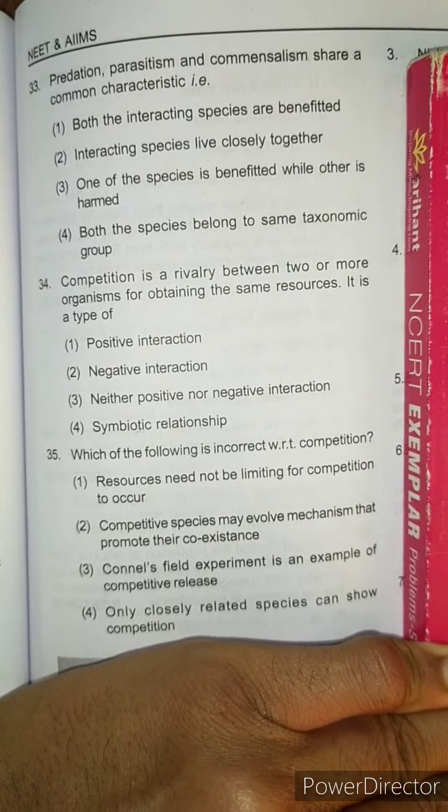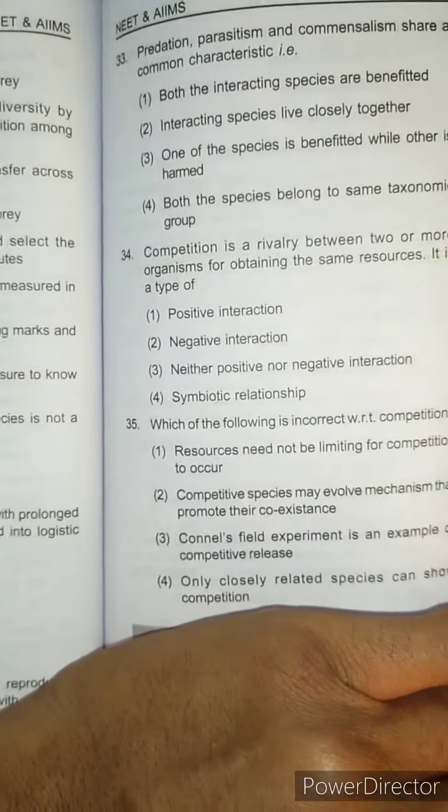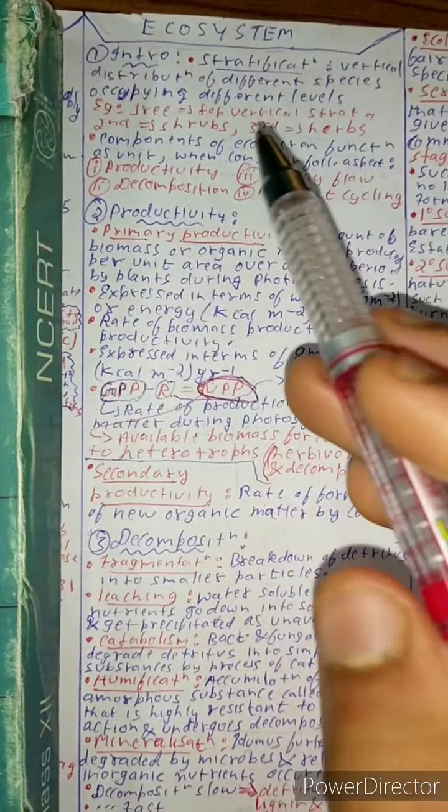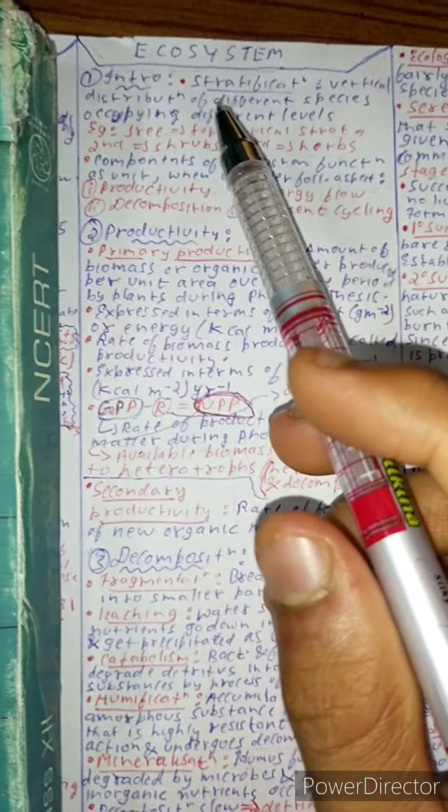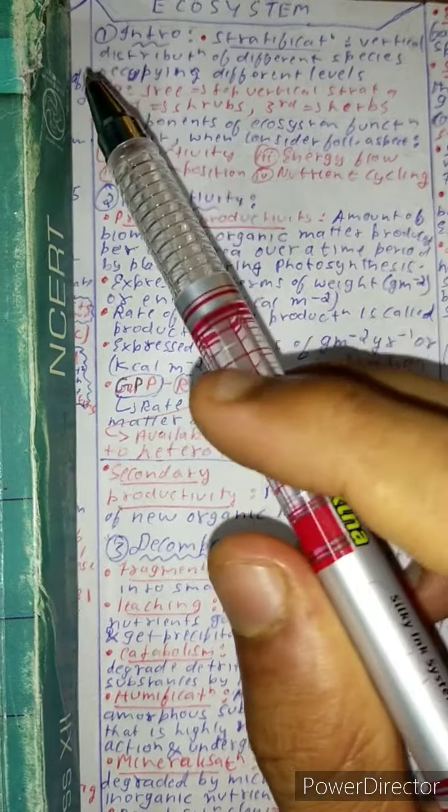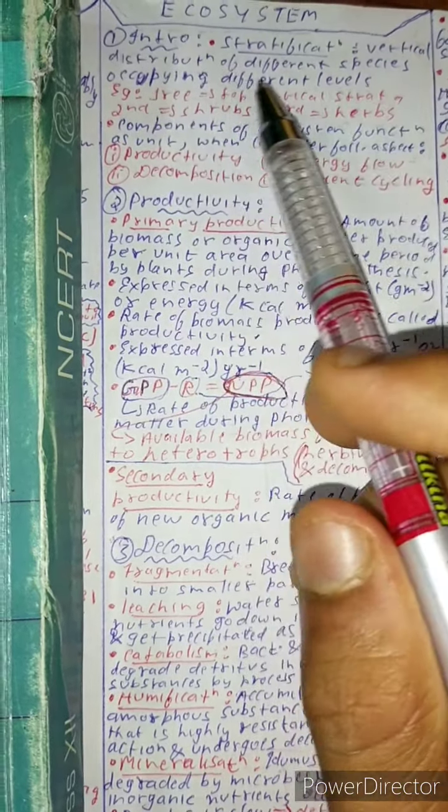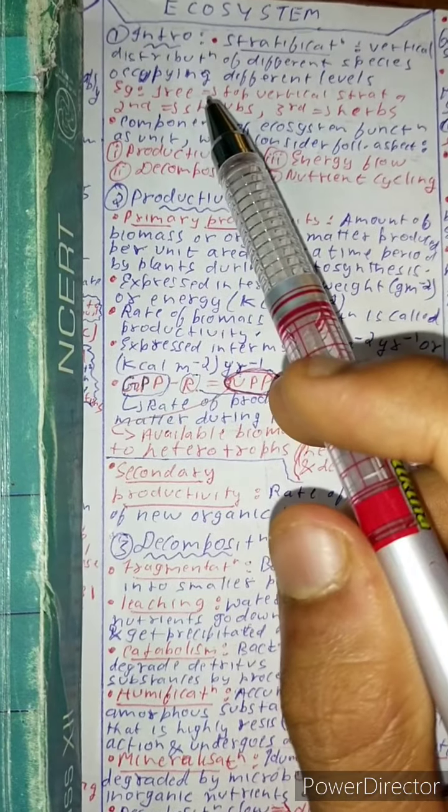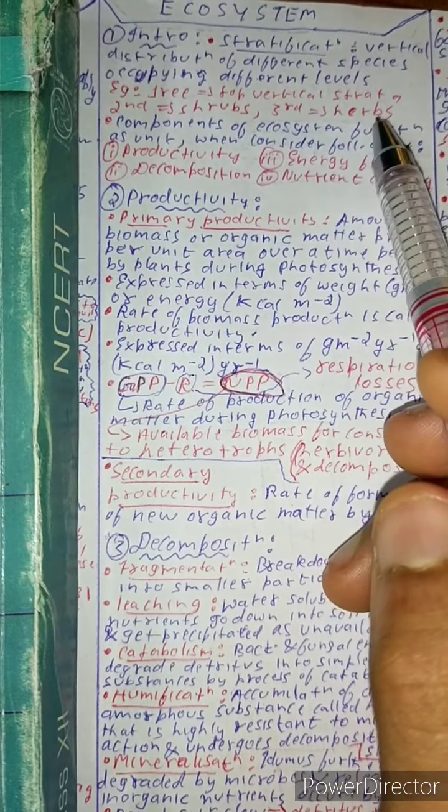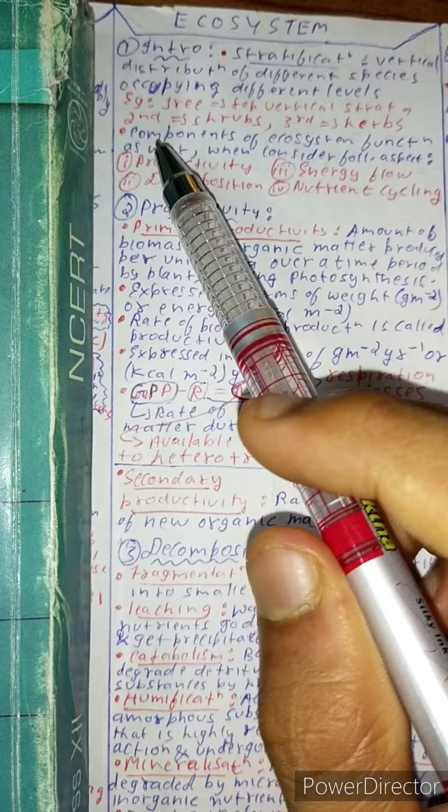Let's start the chapter Ecosystem. First of all, introduction. What is stratification? Stratification is a vertical distribution of different species occupying different levels. Example: trees occupy the top vertical strata, the second is shrubs, and third is herbs.